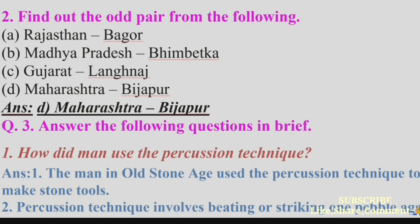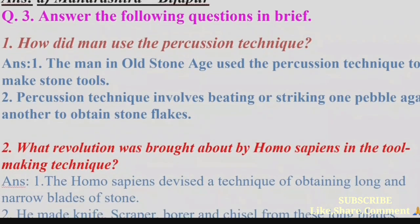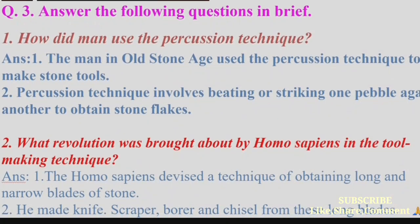Question 3: Answer the following questions in brief. (1) How did man use the percussion technique? Answer: The man in the Old Stone Age used the percussion technique to make stone tools. Percussion technique involves beating or striking one pebble against another to obtain stone flakes.